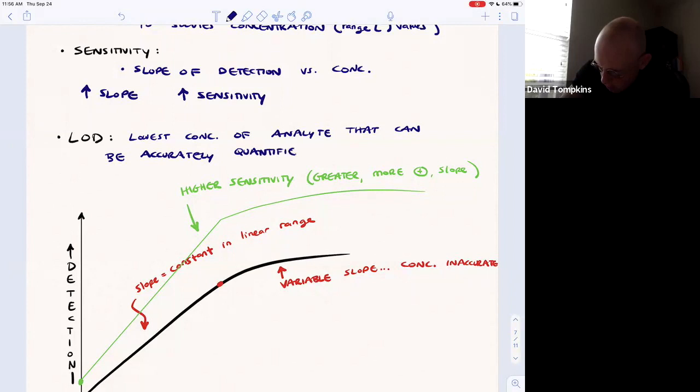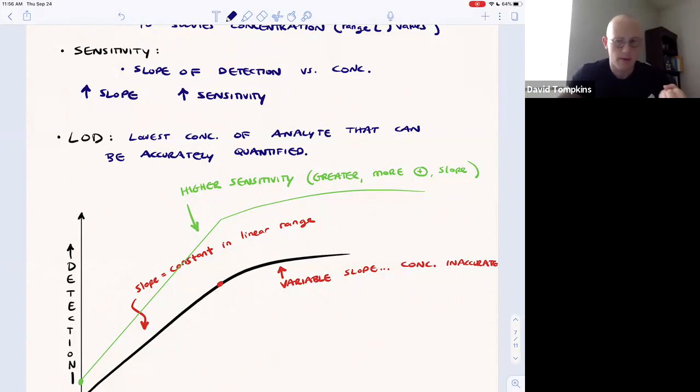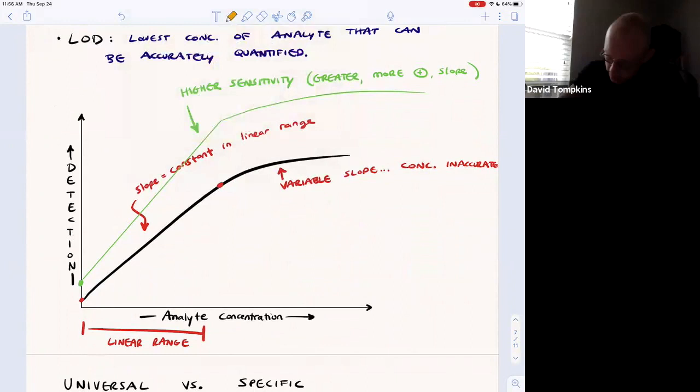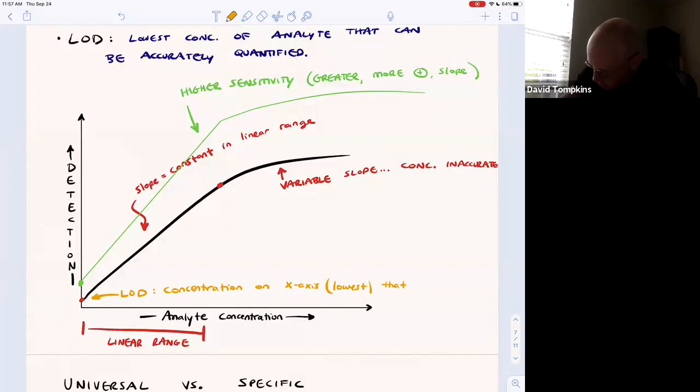Below the limit of detection, we cannot rely on the detection value telling us anything accurate about the concentration. So that limit of detection is shown here. It would be whatever concentration is on the x-axis. Specifically, it's the lowest concentration on the x-axis that produces a reliable signal.